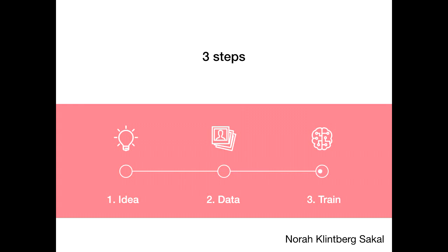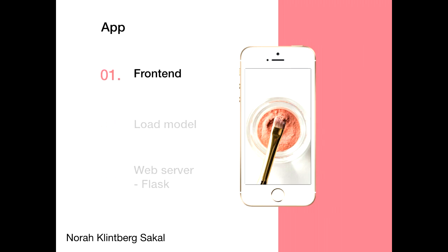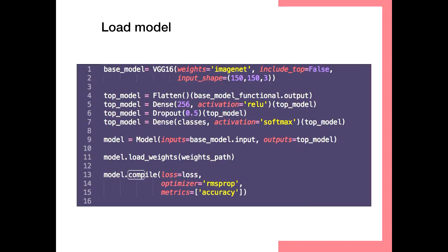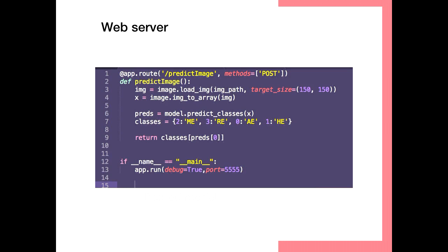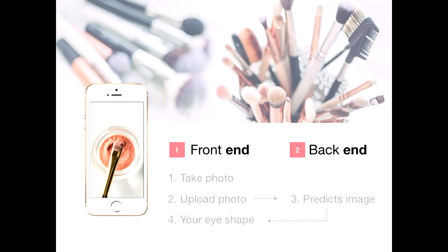Because the accuracy was fairly high, I got really excited and wanted to take it from the idea phase into a real product. So I built a small app. Super simple front end using Angular and Bootstrap, and the back end is basically just the model — about 15 lines of code: the base model, the top model, and the pre-trained weights. For the back end I use the Python web server framework Flask. It takes an image from the front end, predicts which one of the four classes it is, and returns the class. The front end takes the picture, uploads it to the back end, which predicts the eye shape and shows you the result.